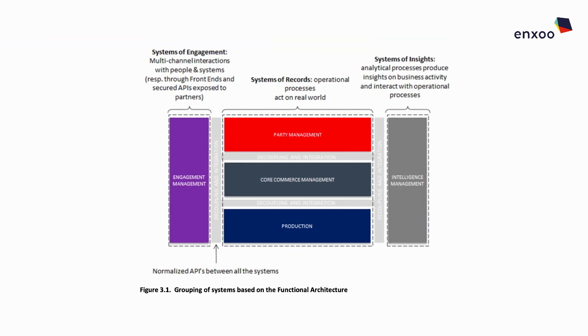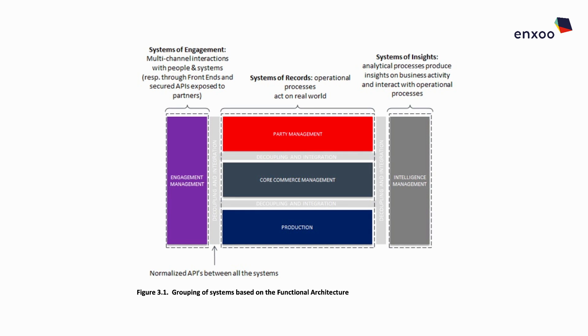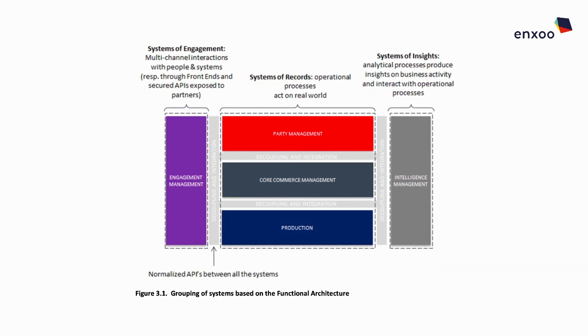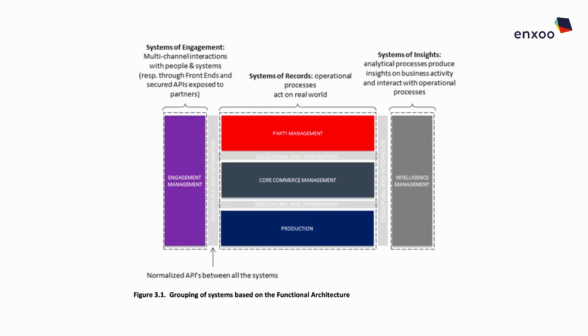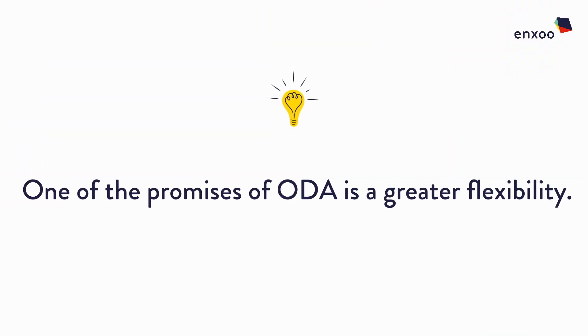What I find extremely interesting is that ODA clearly defines the character and responsibility of components within each grouping, classifying them as: systems of engagement, responsible for providing multi-channel interactions through frontends or APIs; systems of record, responsible for storing data and executing business processes; and systems of insights, responsible for aggregating data and providing business insights. This is quite an interesting concept because one of the promises of ODA is greater flexibility.